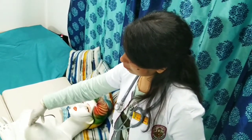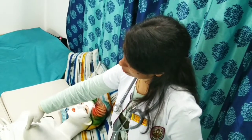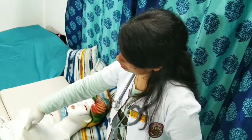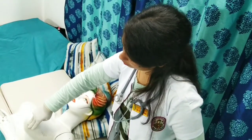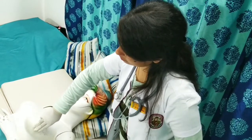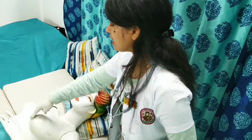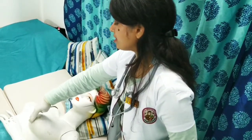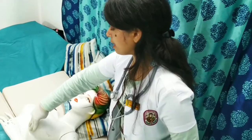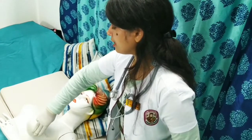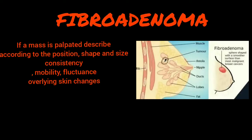Check for any masses. Press downward using a circular motion. Apply steady pressure pushing down to three levels of depth: first superficial, second medium, and the third deep level of the chest wall. If a mass is palpated, describe it according to position, size and shape, consistency, mobility, fluctuance, and overlying skin changes.